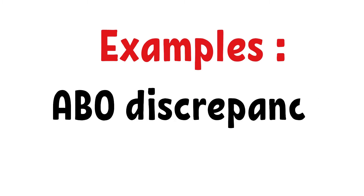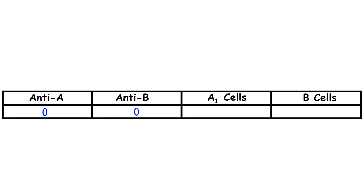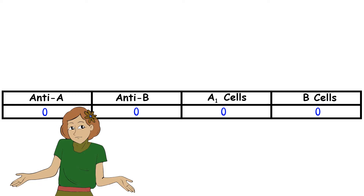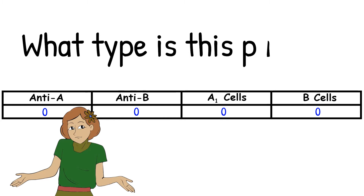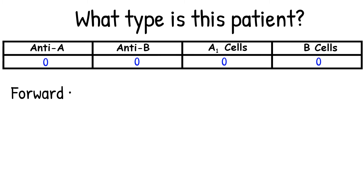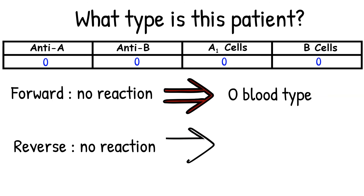Let's take a look at some examples of ABO discrepancy problems. Take a moment to look at this reactivity — you can pause the video if you need more time. What blood type do you think the patient has and how would you approach this problem? When you look at this reaction, there are no reactions in either forward or reverse. Looking at the forward reactions, you get O blood type. Looking at the reverse typing, you get an AB blood type.